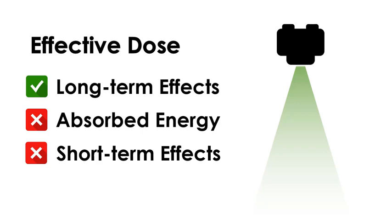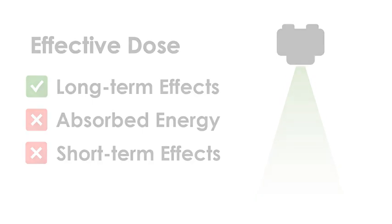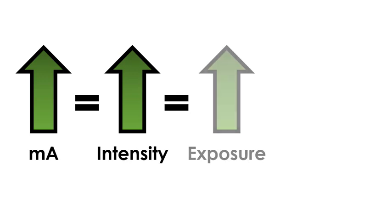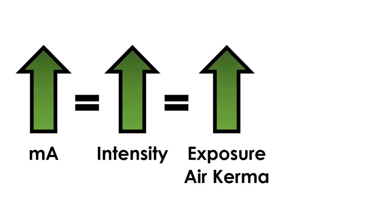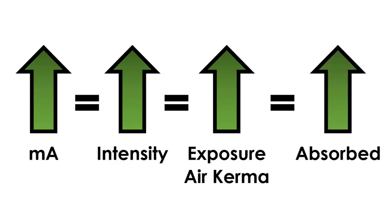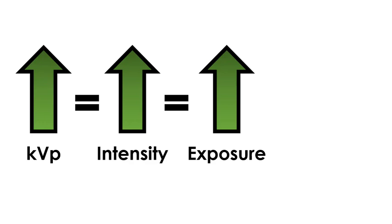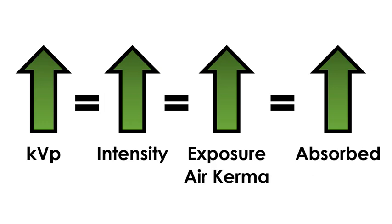Even though these dose measurements might be used in different ways, they're also related in some ways. For example, if we increase the mA, this is going to increase the beam intensity, which then will increase the exposure as well as the air kerma, and that is going to result in an increase in the absorbed dose, the equivalent dose, and the effective dose. The same thing is true for kVp — if we increase the kVp, this is going to increase the beam intensity, resulting in a measurable increase in the exposure and air kerma, and if those increase, it's also going to increase the absorbed dose, the equivalent dose, and the effective dose.